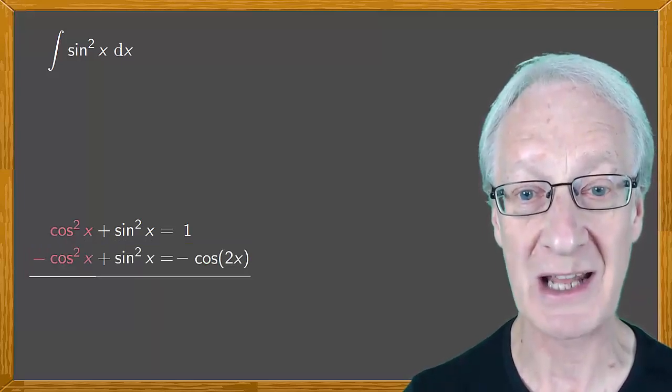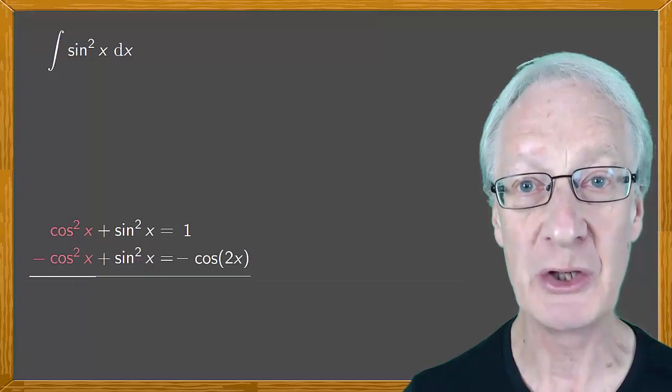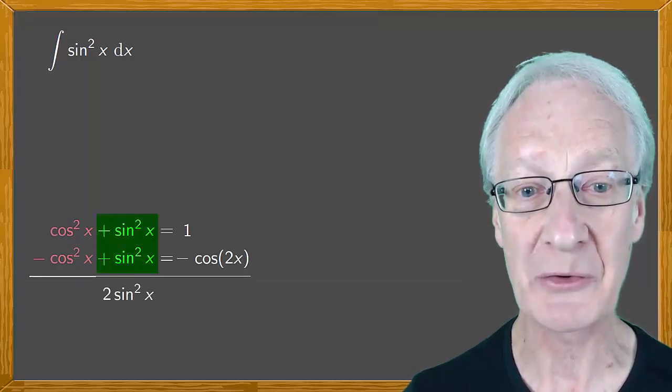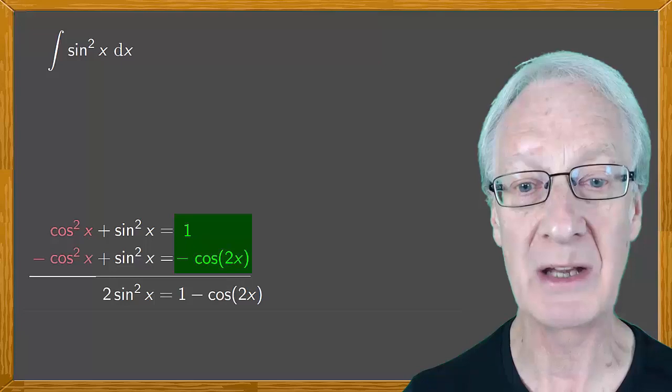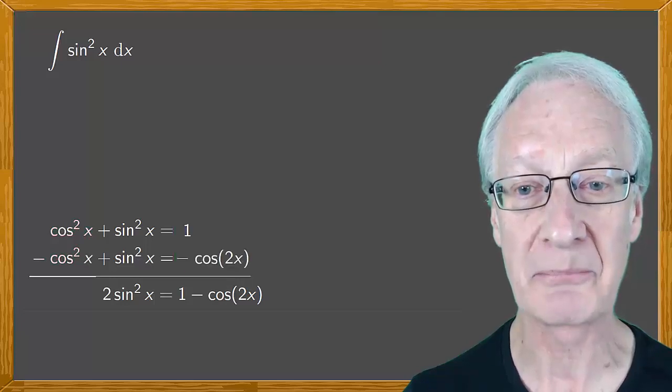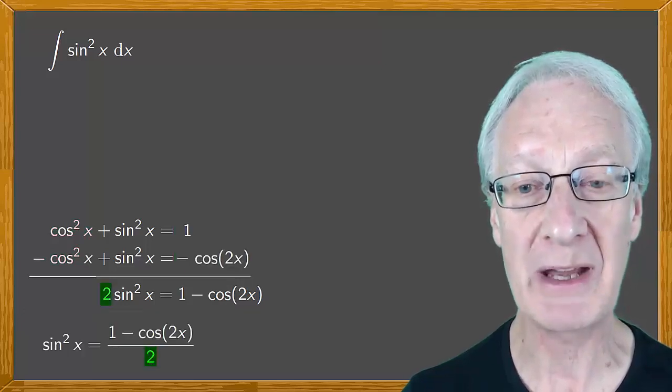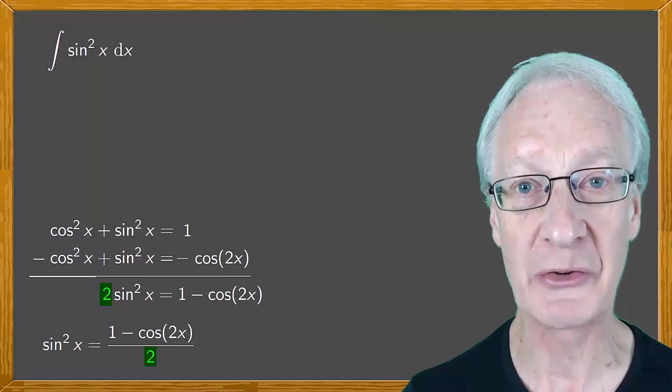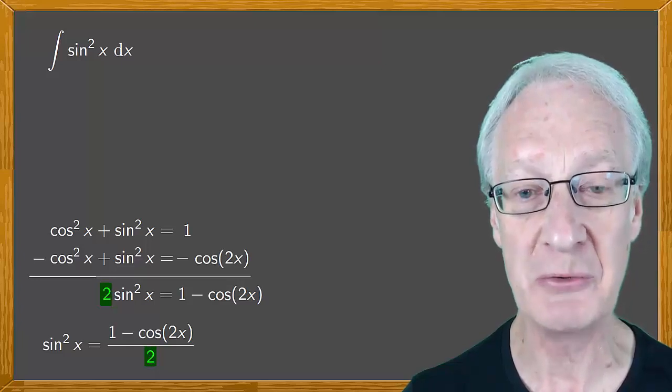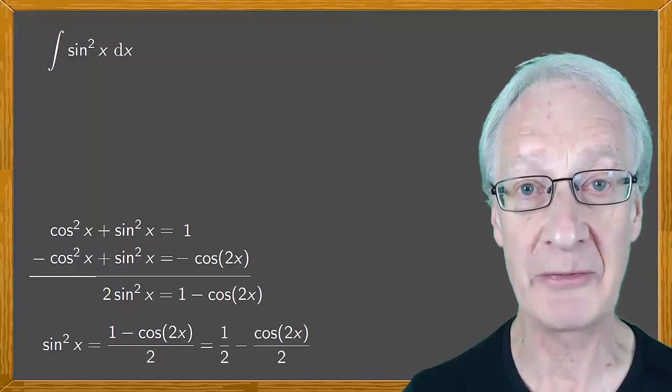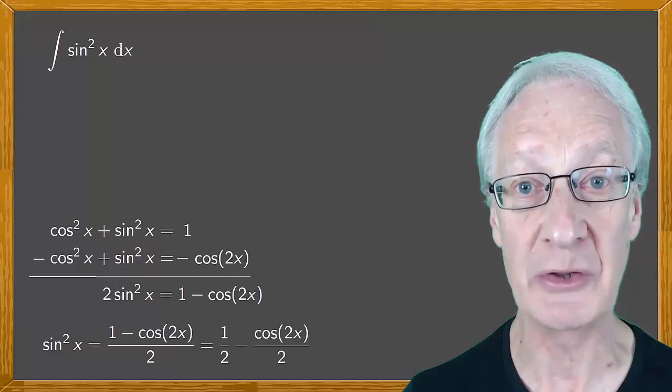Now when we add the two equations, the cosine squareds cancel out, and we're left with 2 sine squared x equals 1 minus cos 2x. So, sine squared x equals 1 minus cos 2x divided by 2, which is a half minus cos 2x over 2.